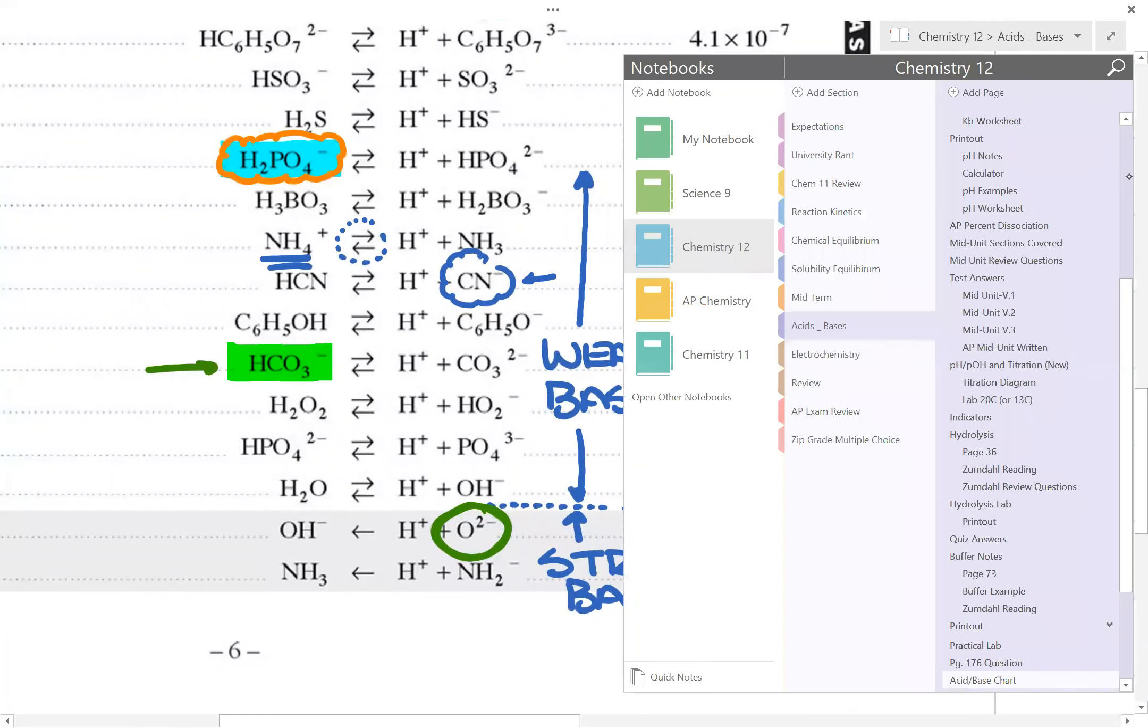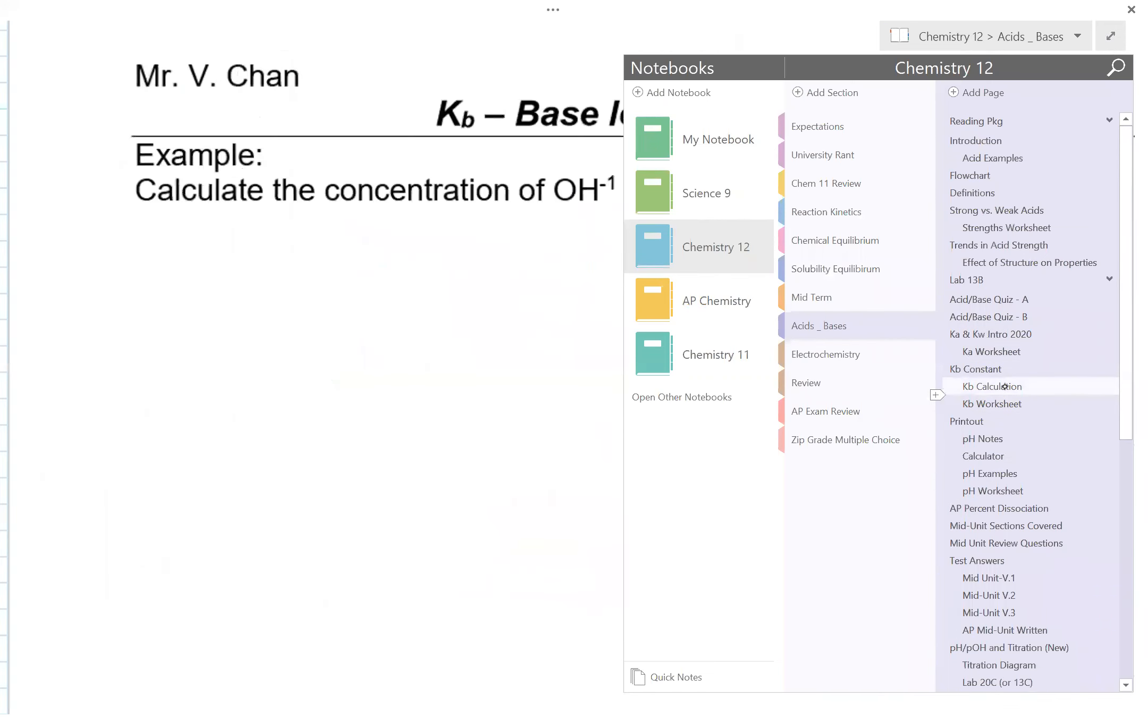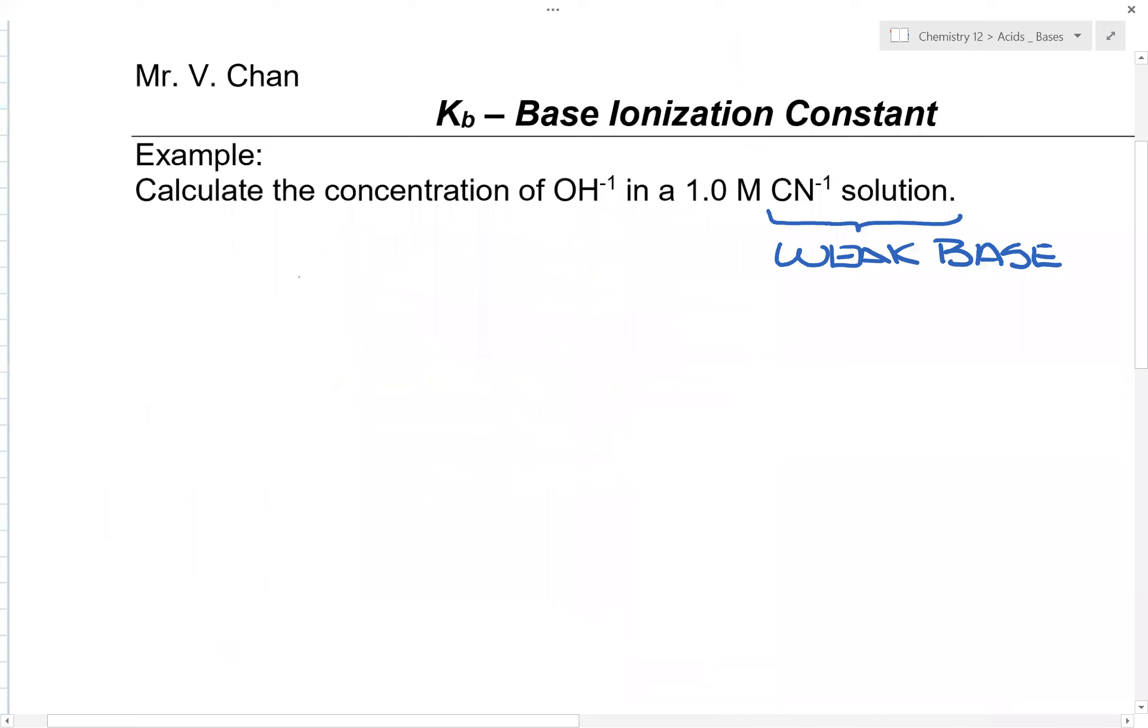So going back to the question that we had here, let's see Kb. So in this particular case, CN⁻¹ plus water would be, in this case, HCN and OH⁻¹.